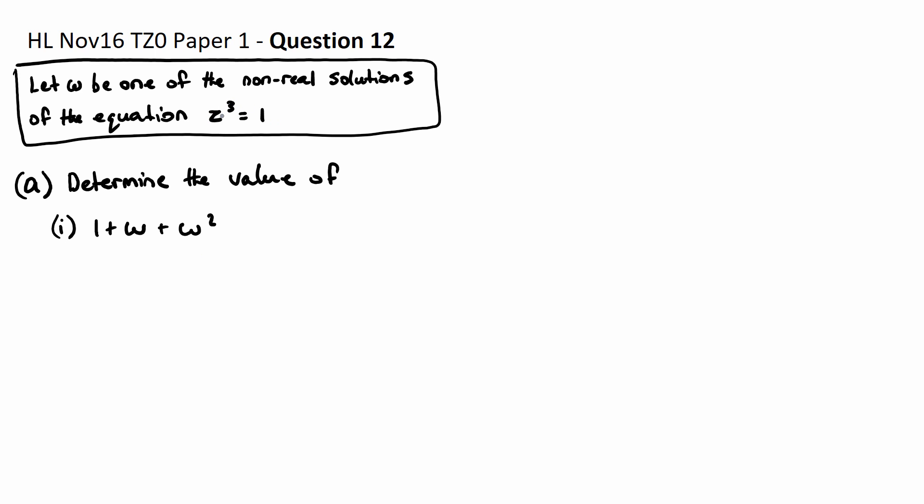This cubed, if you ever get this sort of equation z cubed equals 1, the cube tells us that there are three roots and they're evenly spread out on an Argand diagram. So I want to visually show you what's happening here.